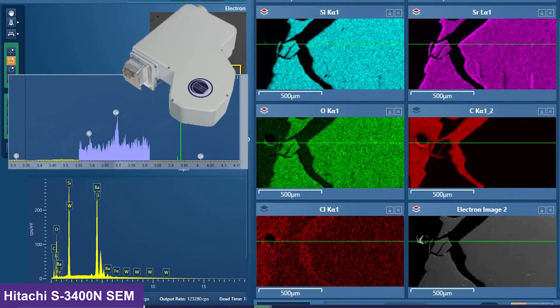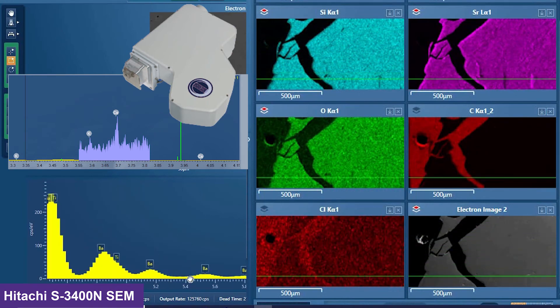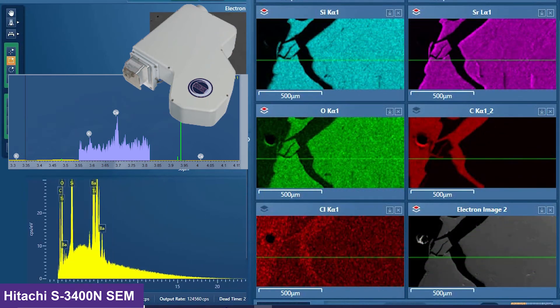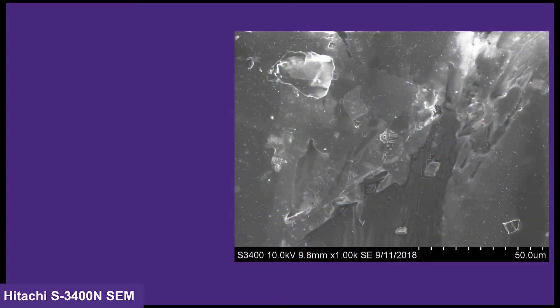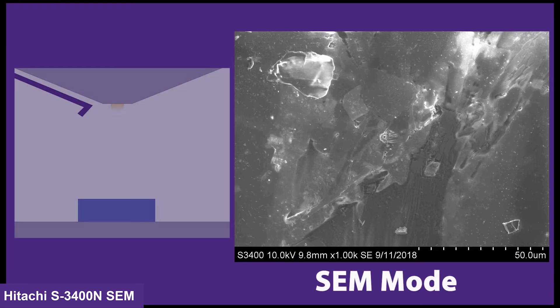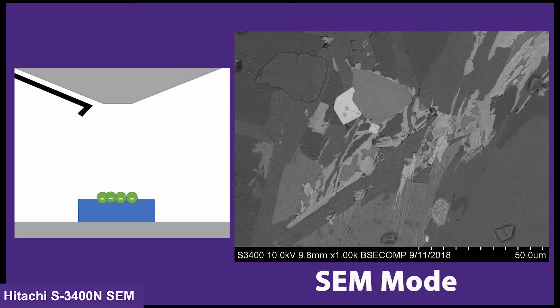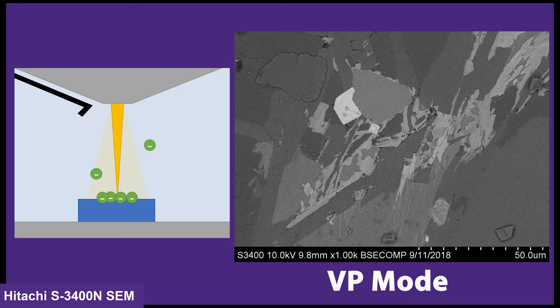This microscope also has a WDS system, or Wavelength Dispersive X-ray Spectroscopy System. With this system, you can do compositional analysis down to 0.01 weight percent. It is also equipped with a variable pressure mode, a technique that allows you to image uncoated, non-conductive samples without charging artifacts. This introduces air or gas into the chamber to create positively charged gas ions to neutralize negative charge buildup on the surface of the sample.